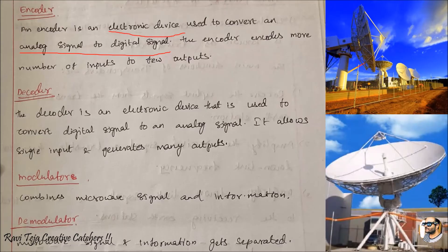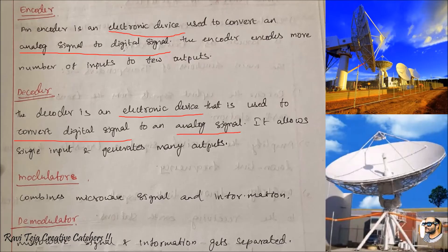Coming to the decoder unit at the receiver end, the decoder is also an electronic device that is used to convert a digital signal back into an analog signal. At the transmitting end we convert analog to digital, and at the receiver or decoder end we convert digital back to analog. It allows a single input to generate many outputs, as we use a demux at the decoder end to route to multiple outputs.